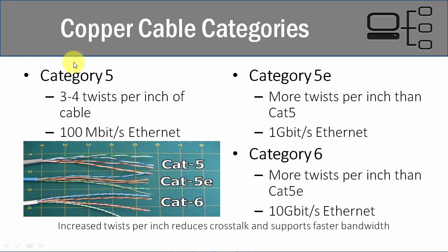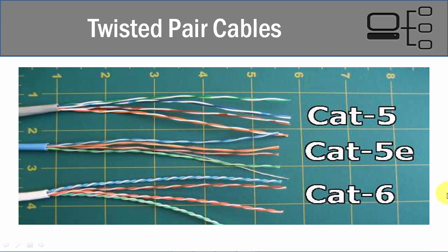Looking at the bigger picture, you can see from one end to the other a minimal amount of twists on Cat 5, versus numerous twists on Cat 6. Those twists allow higher bandwidth speeds because of all the benefits in reducing EMI, reducing crosstalk, and reducing signal emanation.